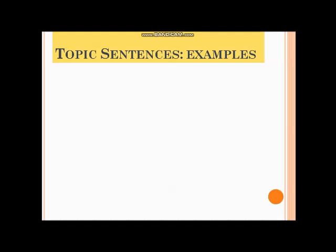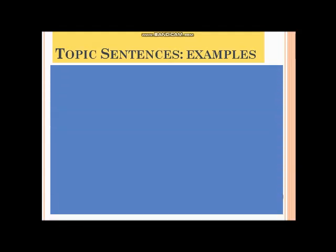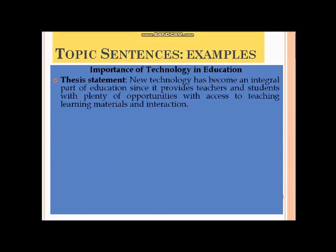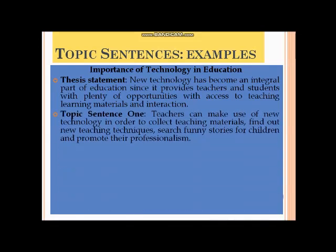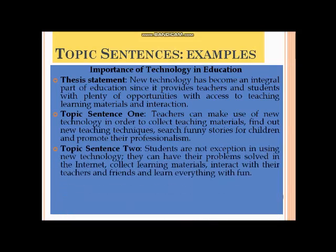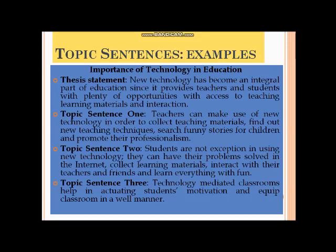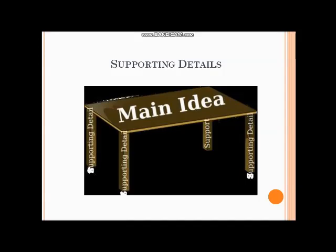Here you can see some examples of topic sentences. The essay topic is 'Importance of Technology in Education.' First there is the thesis statement, and on the basis of that thesis we develop three main ideas for our three body paragraphs. The thesis is: 'New technology is important for teachers and students.' Topic sentence one: teachers can use new technology to collect materials and promote professionalism. Topic sentence two: students can take help of new technology for their learning. Topic sentence three: students can be motivated when teachers use new technology in the classroom.